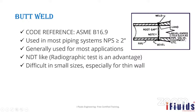An advantage of butt weld is that NDT testing, specifically radiographic testing, can be performed to verify the weld quality. A disadvantage is the difficulty in small sizes, especially for thin-wall pipe — schedule 5 or schedule 10 — where there is not much thickness, making welding problematic.